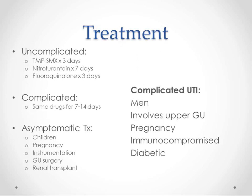On to treatment. Complicated versus uncomplicated: uncomplicated is usually in healthy women, whereas complicated UTIs are in men — any time a man has a UTI, you call it complicated. If it involves anything above the bladder — so the ureters or kidneys especially — it's complicated, and we call it pyelonephritis if it's in the kidneys. Pregnancy, immunocompromised patients, and diabetic patients are also classified as complicated UTIs.